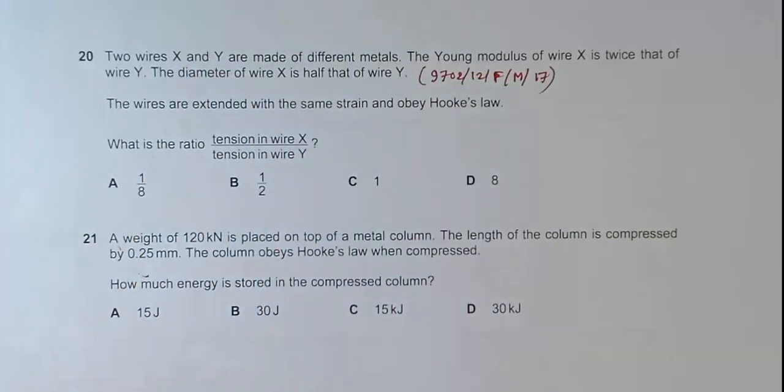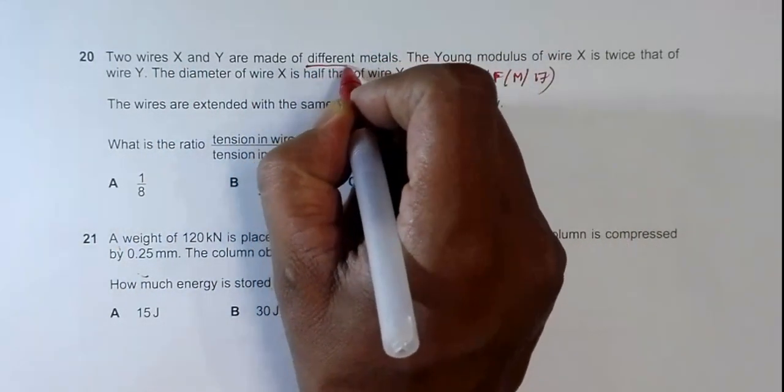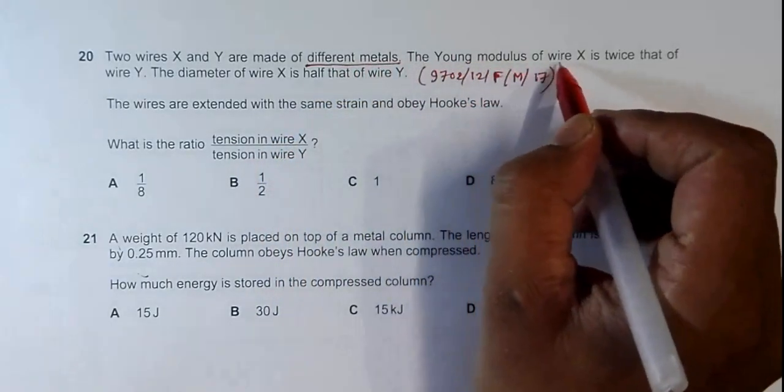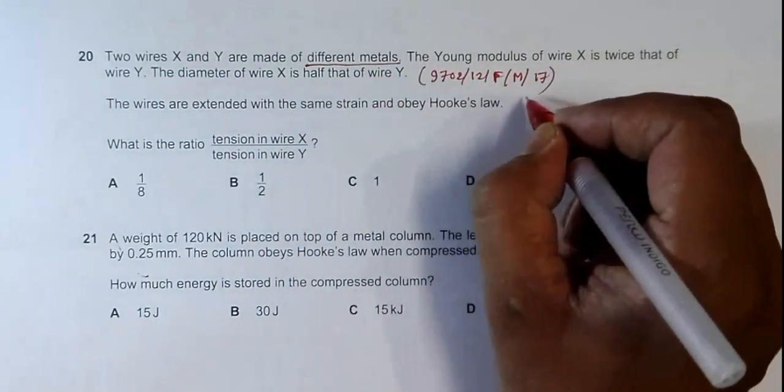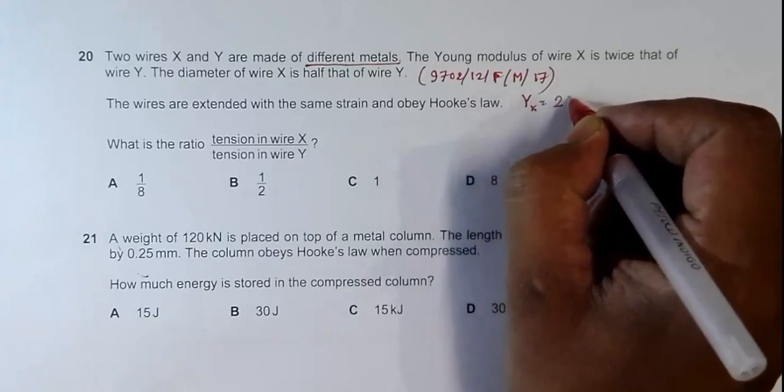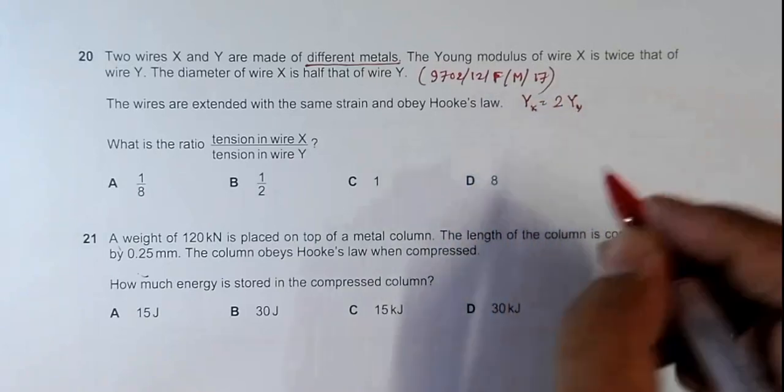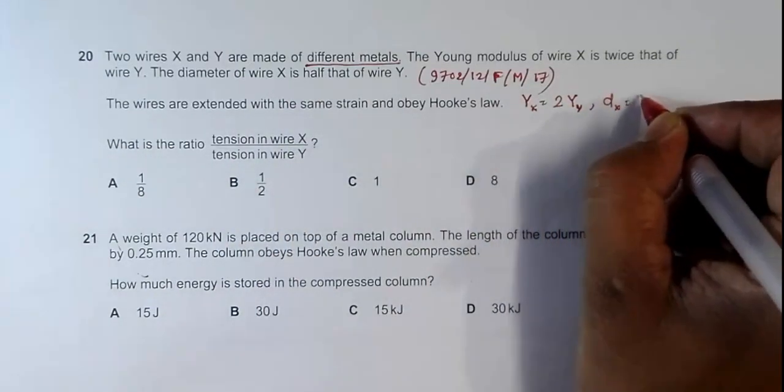Wires X and Y are made of different materials, different metals, so their Young's modulus is different. The Young's modulus of wire X is twice that of wire Y. That means the Young's modulus of X equals twice the Young's modulus of Y.